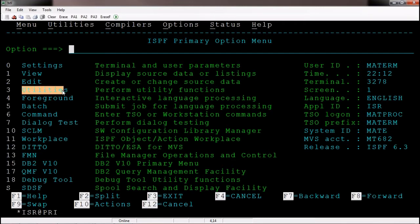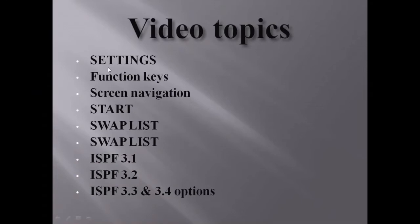We discussed the utilities option — there are many sub-options. Some are not critical for this particular course, but if you are working on mainframe you should be aware of them. So, to recap, I have explained 3.1, 3.2, 3.3, and 3.4 at a high level. Don't worry — in our next video we are going to focus on 3.2, 3.3, and 3.4 practically.